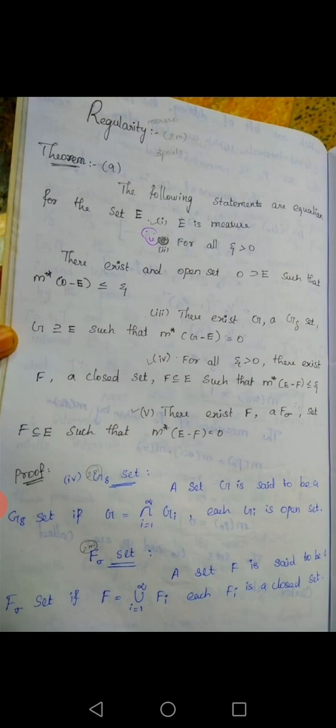The following statements are equivalent for a set E. First: E is measurable. Second: for all epsilon greater than zero, there exists an open set O, with E subset of O, such that M-star of O minus E is less than or equal to epsilon.